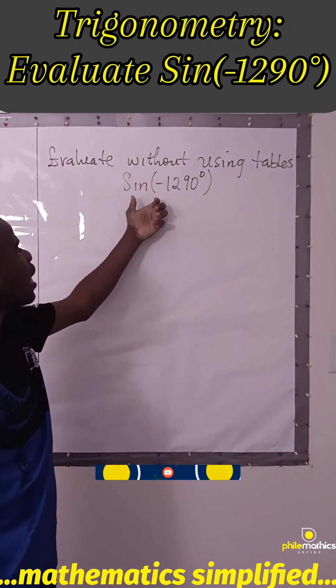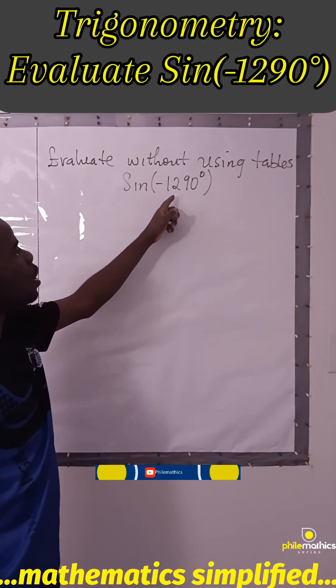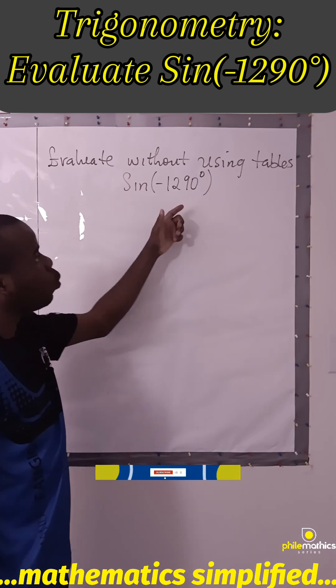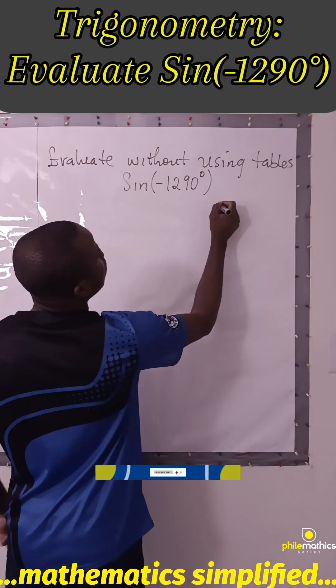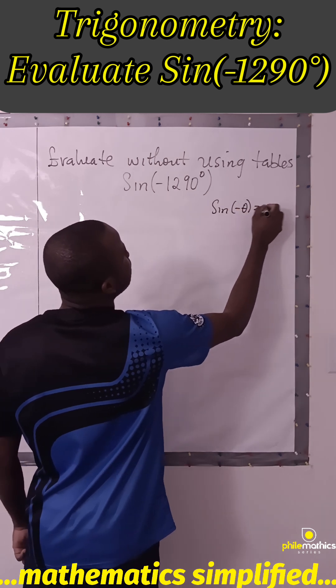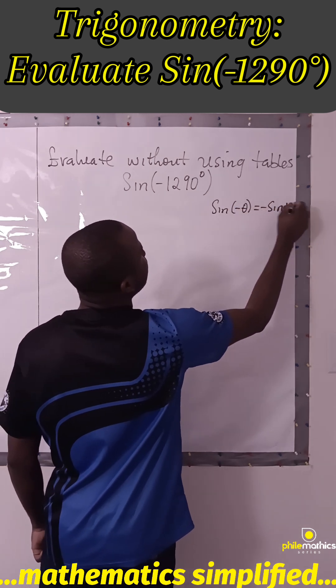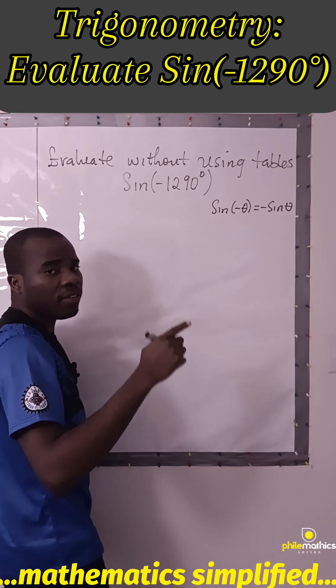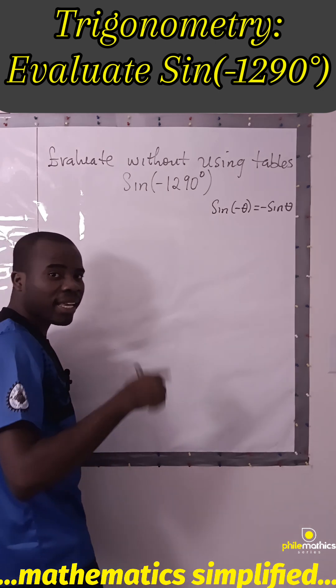For us to evaluate sin(-1290°) without using tables, we need to know that sin(-θ) is the same as -sin(θ), and sine is positive in the first and second quadrant but negative in the third and fourth quadrant.